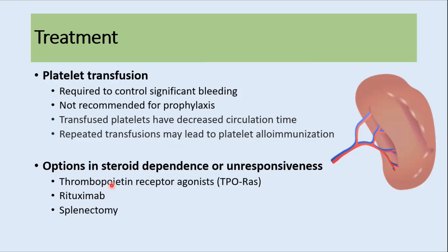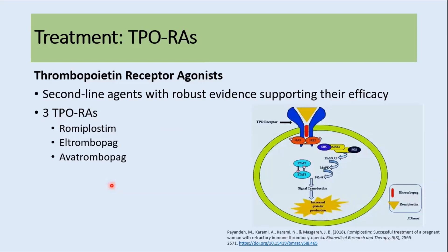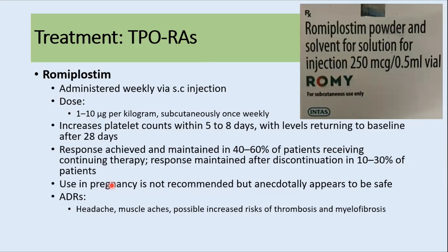If first-line treatments are not effective and the patient is steroid-dependent or unresponsive, they can be treated with other agents like thrombopoietin receptor agonists, rituximab, or splenectomy. There are currently three thrombopoietin receptor agonists: romiplostim, eltrombopag, and avatrombopag. Romiplostim is given by subcutaneous injection at 1 to 10 micrograms/kg once a week. It increases platelet count within 5 to 8 days, with levels returning to baseline after 28 days, and response is achieved in around 40 to 60 percent of patients on continuous therapy. It is not indicated in pregnancy unless no other options exist, and adverse effects include headache, muscle aches, and possible increased risk of thrombosis and myelofibrosis.